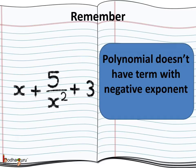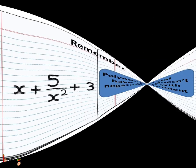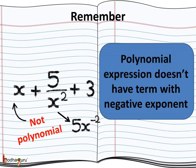If any algebraic expression has a term with a negative exponent, then we can't call it a polynomial expression. For example, x + 5/x² + 3. This is not a polynomial. 1/x² is x raised to power -2, so this expression is not a polynomial.